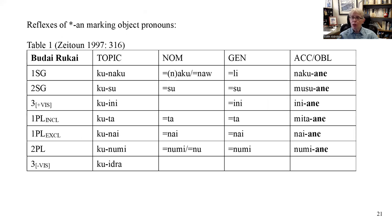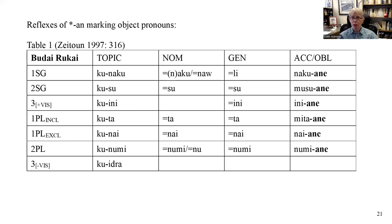I want to look at some more data. I'm showing you another Rukai dialect, Budai, where the -an suffix is reflected very clearly. In Tanan it has been reduced to just the vowel -a, but Budai reflects it faithfully. The -e at the end is just an epenthetic schwa, so this is pronounced -anu.